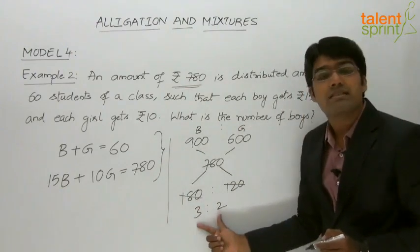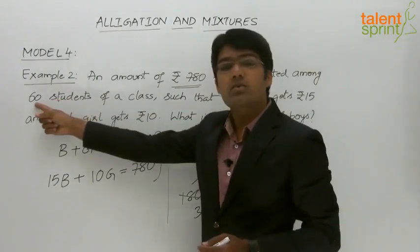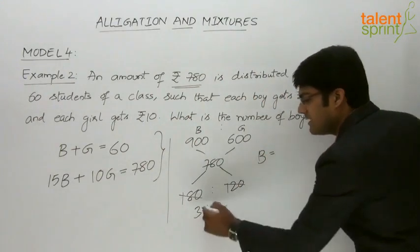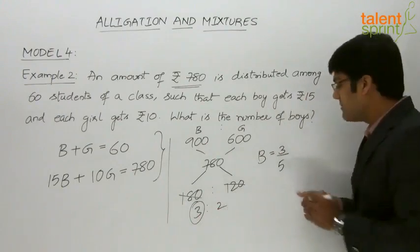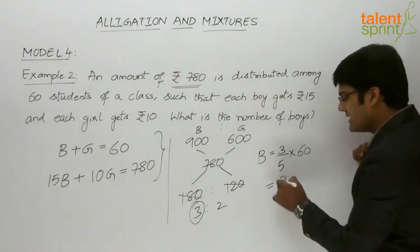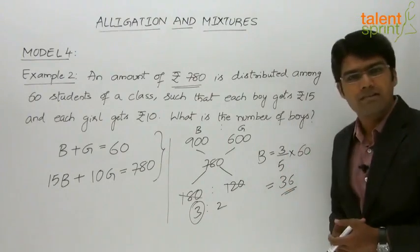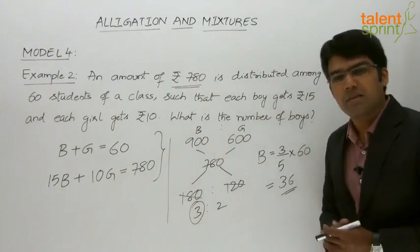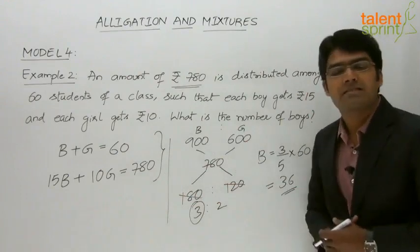The ratio of boys to girls is 3 to 2, and there are 60 total students. So the number of boys equals 3 parts out of 5 total: 3 by 5 into 60 equals 36. There are 36 boys and 24 girls. Solving the two equations also gives the number of boys equal to 36. Either method can be used to obtain the answer.